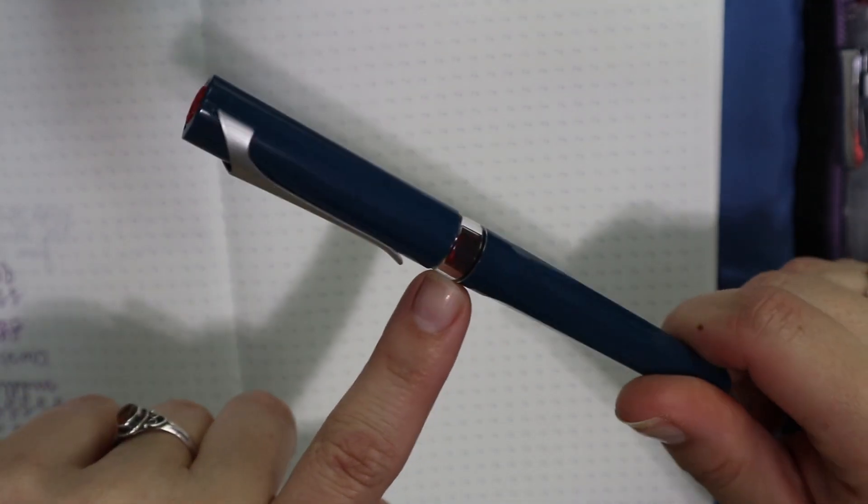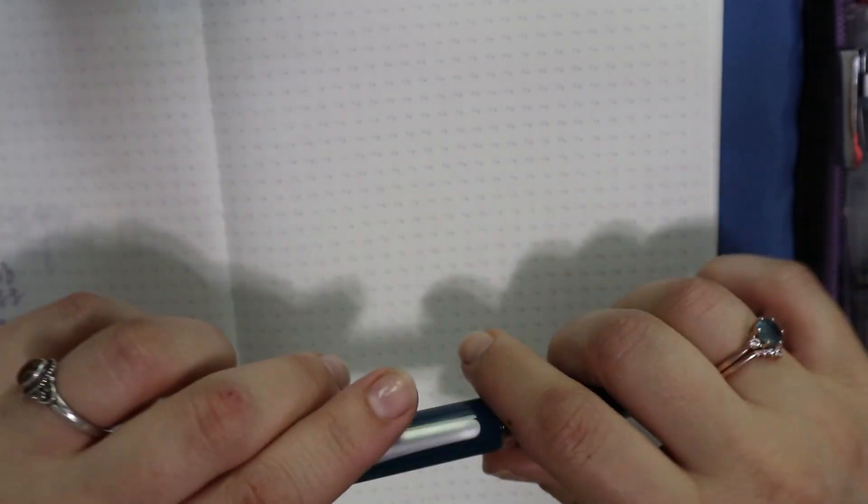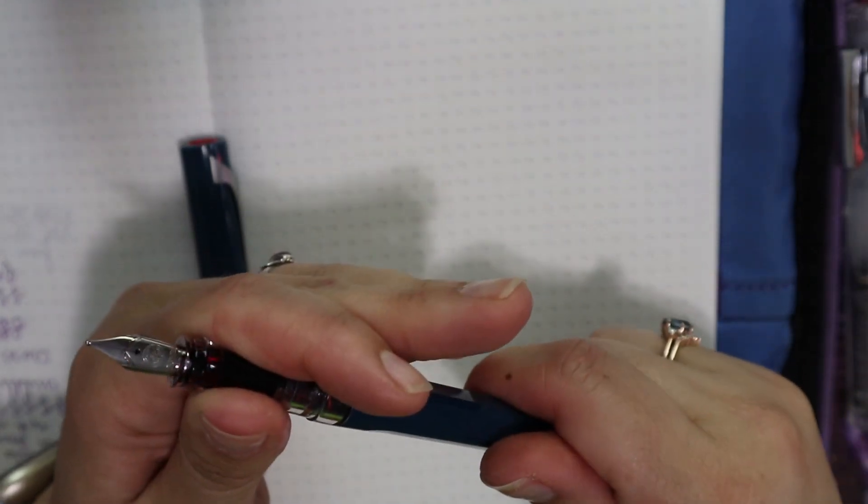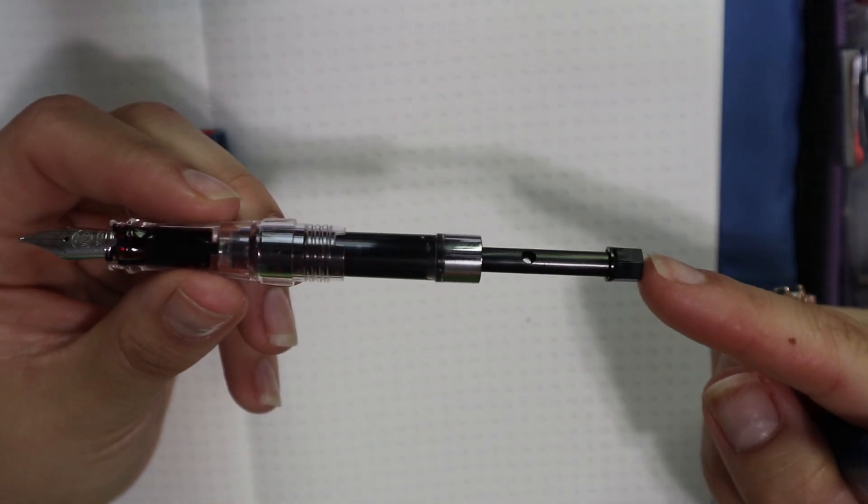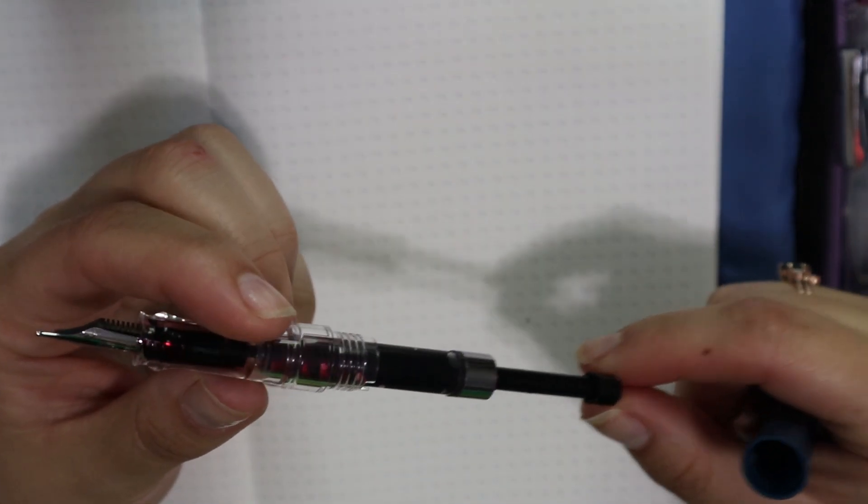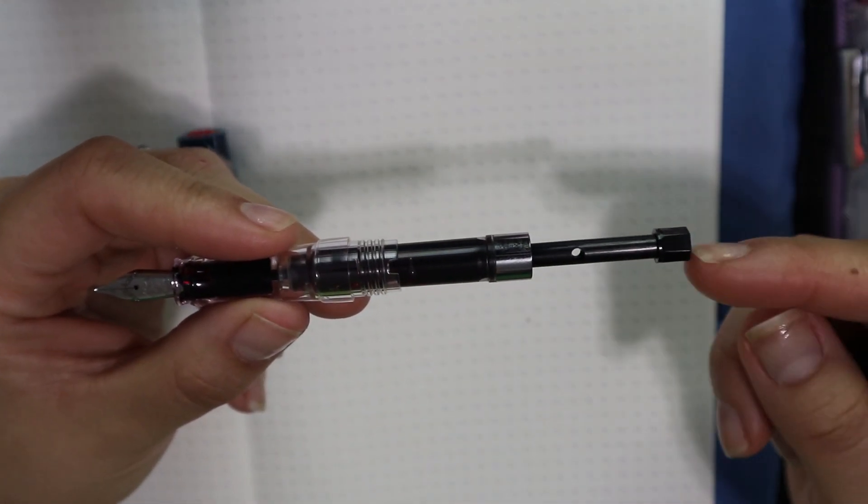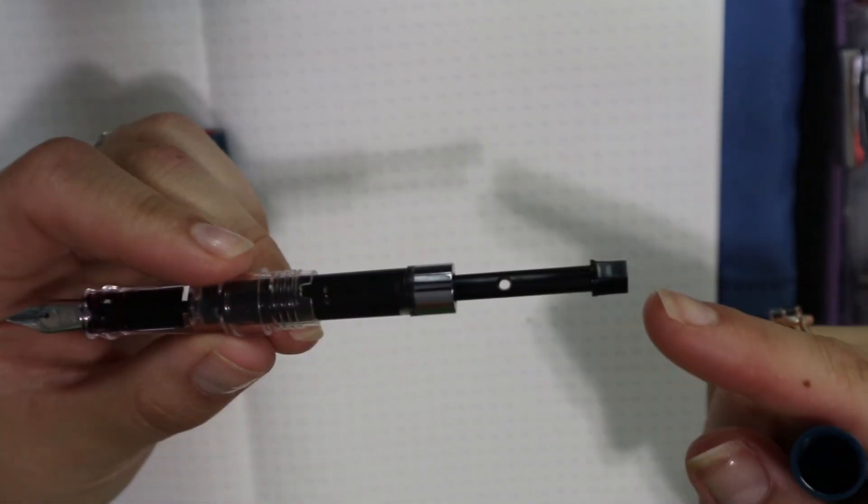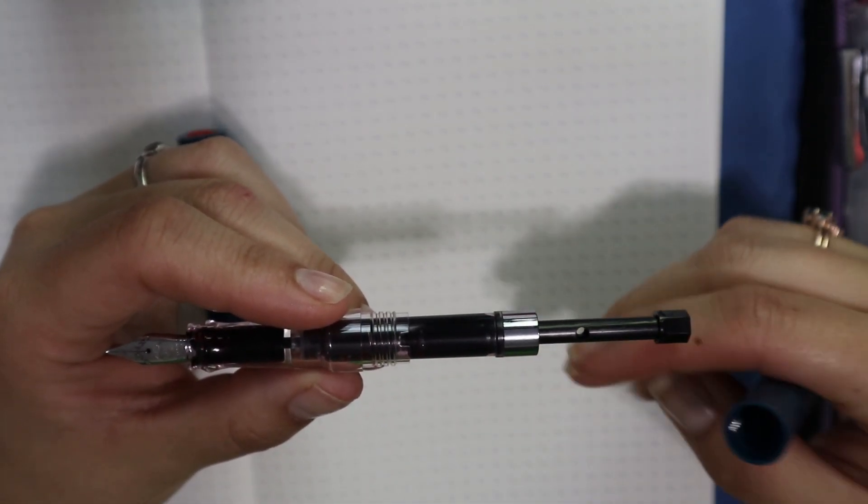You have like an ink window right here, which is nice. And then this pen has several filling systems. I believe you can get a converter for it, but there's also this like push converter. It's like a vac system. You just push it, and then, well, it's not a vac. It's a push converter, and I'm not gonna push it, but if you push this button, you can suck up ink.